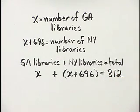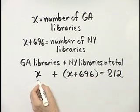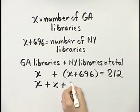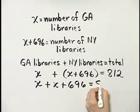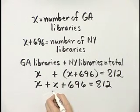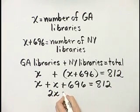We've translated to an equation. Now let's solve that equation. Notice I can take a step and take off parentheses, and that's simply X plus X plus 696 is equal to 812. And then I have like terms, X plus X, that is 2X.